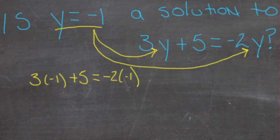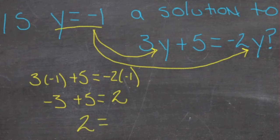And we work through the math using order of operations. 3 times negative 1 is negative 3. Negative 3 plus 5 is equal to negative 2 times negative 1, that's positive 2. Then we have negative 3 plus 5 is positive 2 equals positive 2.